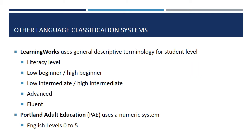Although we just explored the various stages of language acquisition, which are outlined in formal research about the process of learning other languages, many programs, schools, non-profits, etc., use their own language classification system. Here at LearningWorks, to keep things transparent and descriptive, we use generally descriptive terminology. A student described as being at the literacy level is someone who is just learning how to read and write. A low beginner or high beginner is someone who has studied a little English and is still mastering some of the basics and foundations of the language.